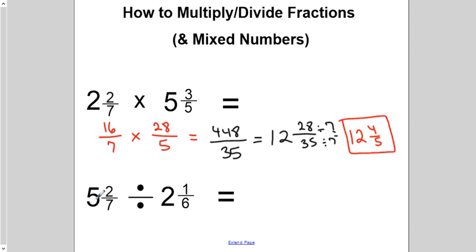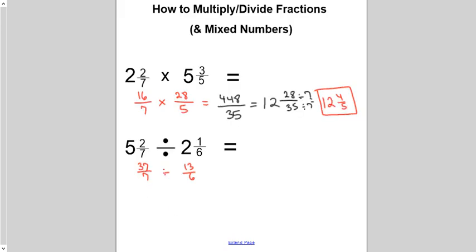I do the same thing over here. I'm going to take these mixed numbers. Make them into improper fractions. So, this will be 37 over 7 divided by 13 over 6. Again. I keep the first fraction the same. I change the division sign to multiplication. And I flip this upside down.